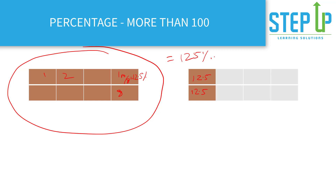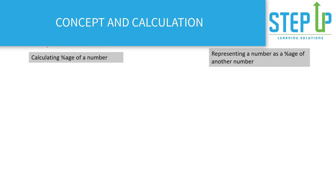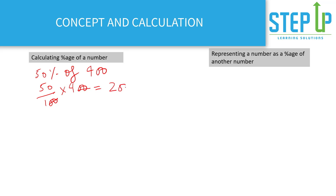So a percentage can be zero to anything. To calculate a percentage of a number — say 50 percent of 400 — you can do 50 upon 100 into 400, which gives 200. Or simply understand that 50 percent is 1 by 2 in fraction terms, so half of 400 is directly 200.